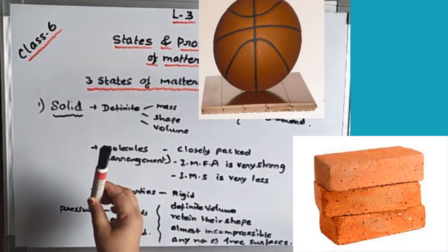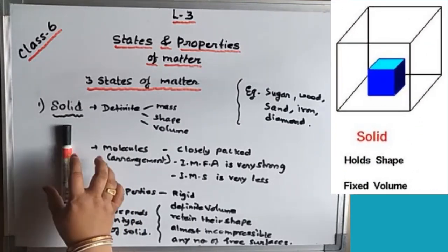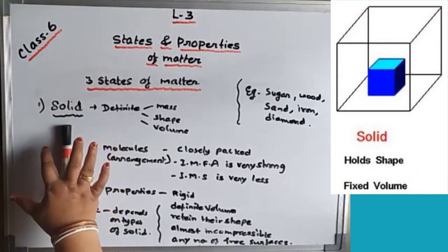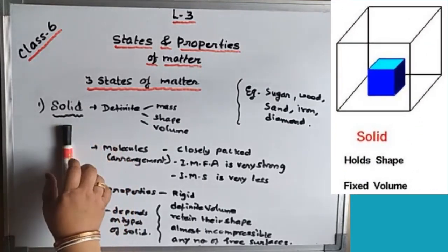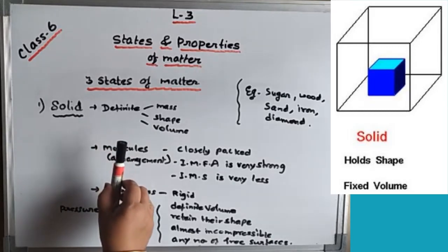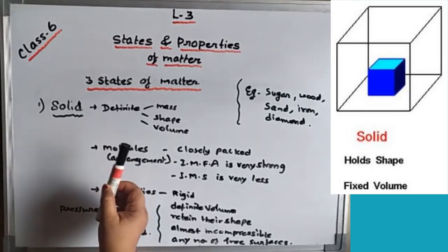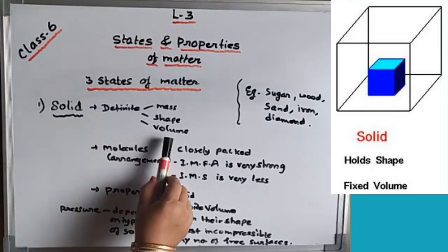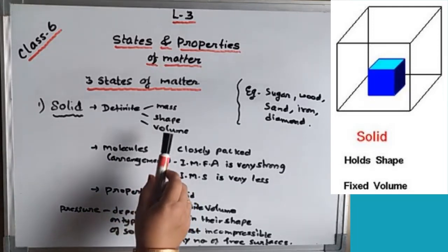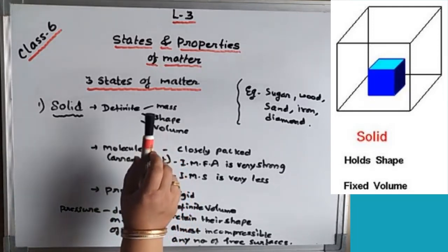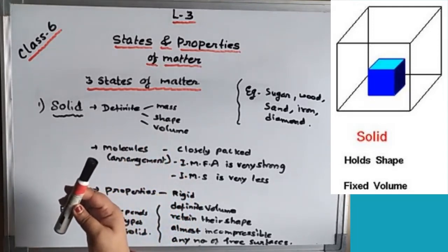Suppose it is a solid. If I keep it on this board, it takes some space with a fixed shape. If I keep it on the floor also, it will take the same space only — that means fixed volume. Volume means the space occupied by an object. And definite mass means it has a fixed mass.